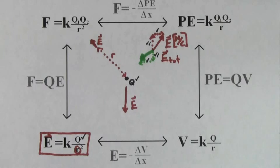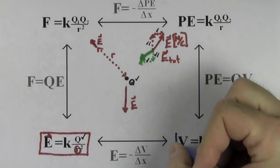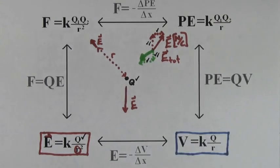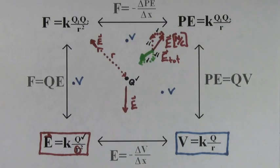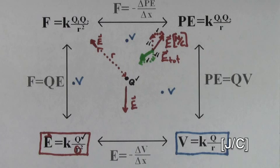This charge Q not only creates an electric field at every point in space around it, it also creates an electric potential V at every point in space around it. The electric potential is not a vector — it's just a number that's either positive or negative. It's measured in joules per coulomb because it tells you how many joules of potential energy a one coulomb charge would have if placed at that point in space.